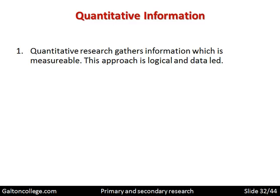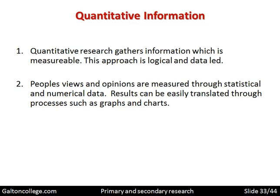Quantitative information is measurable — it's information that's in numbers. It's logical and data-led. This type of research is based on facts, based on numbers. Averages, distributions, standard deviations, and trend lines can be worked out from this type of data. People's views and opinions are measured through statistical and numerical data. Results can easily be translated into processes such as graphs and charts.